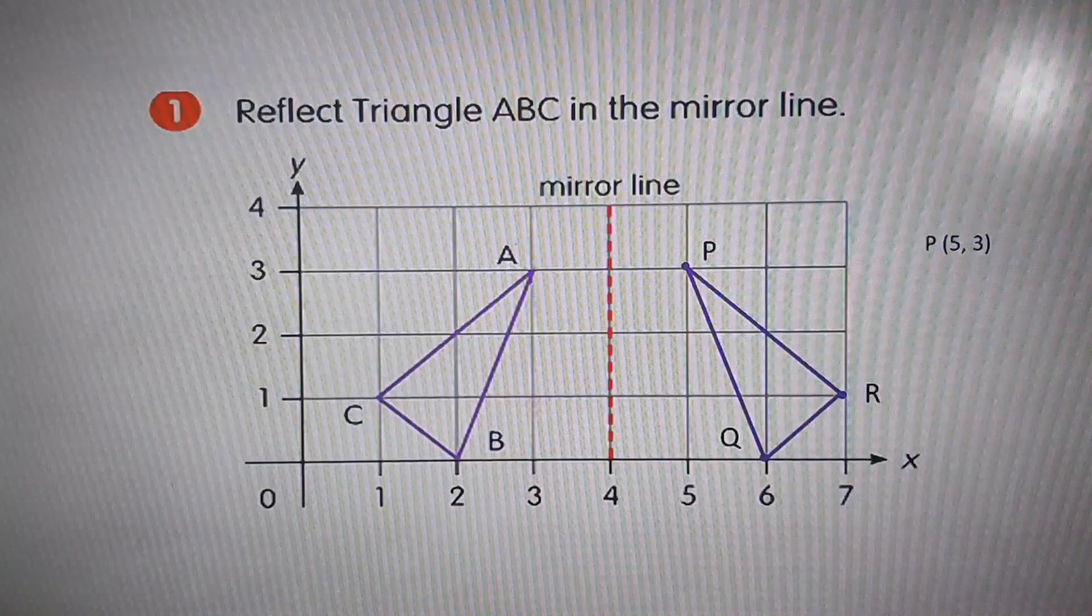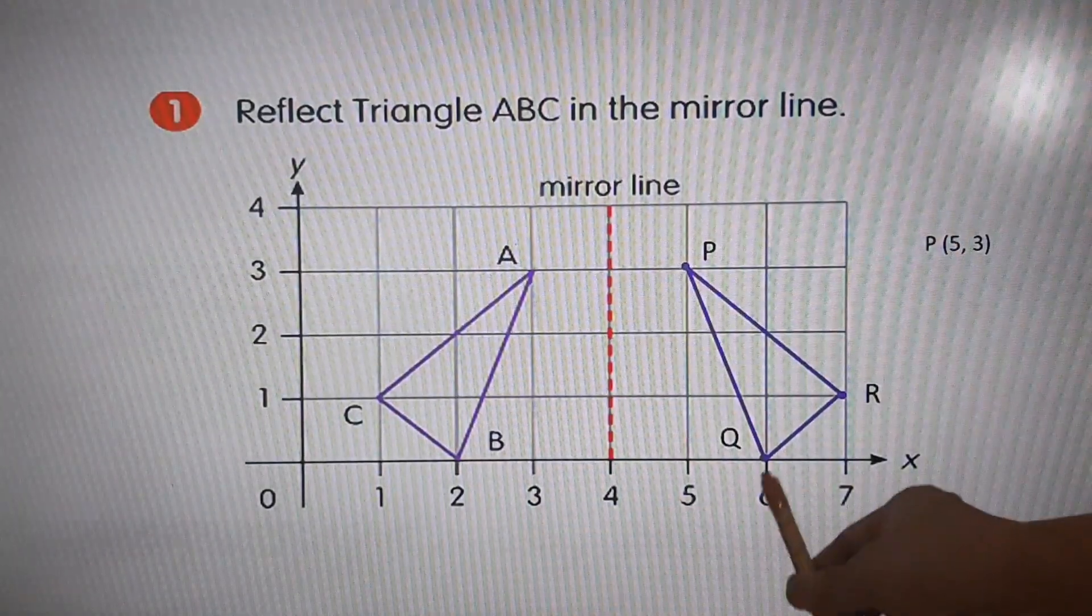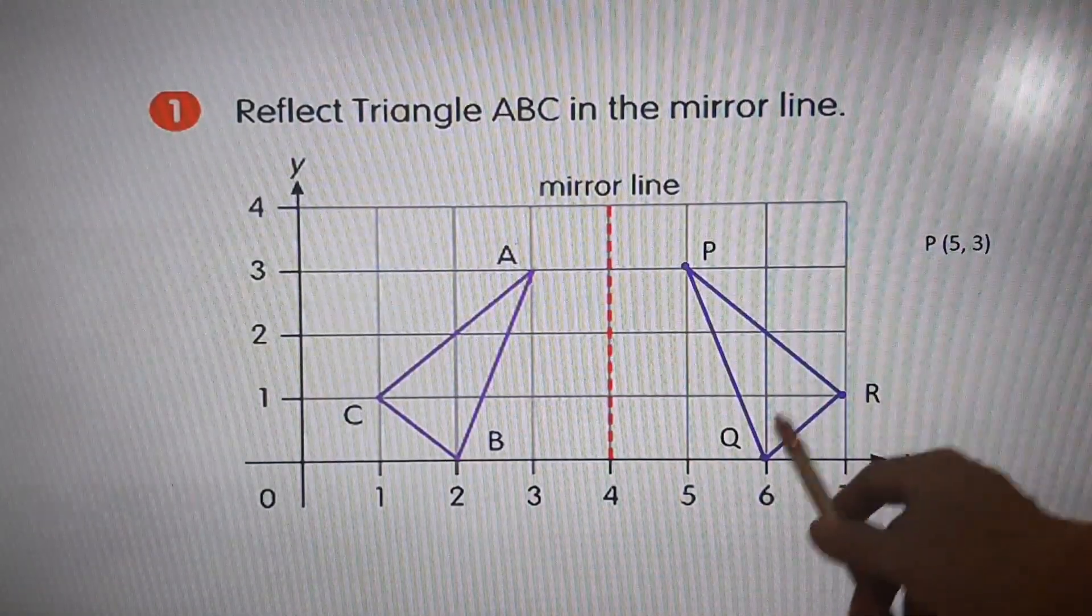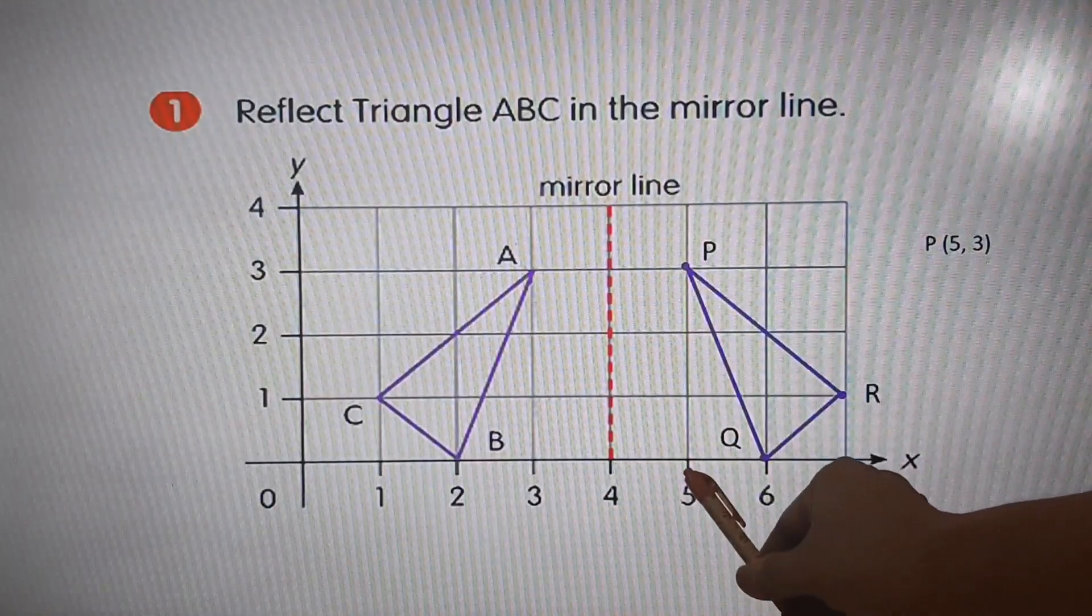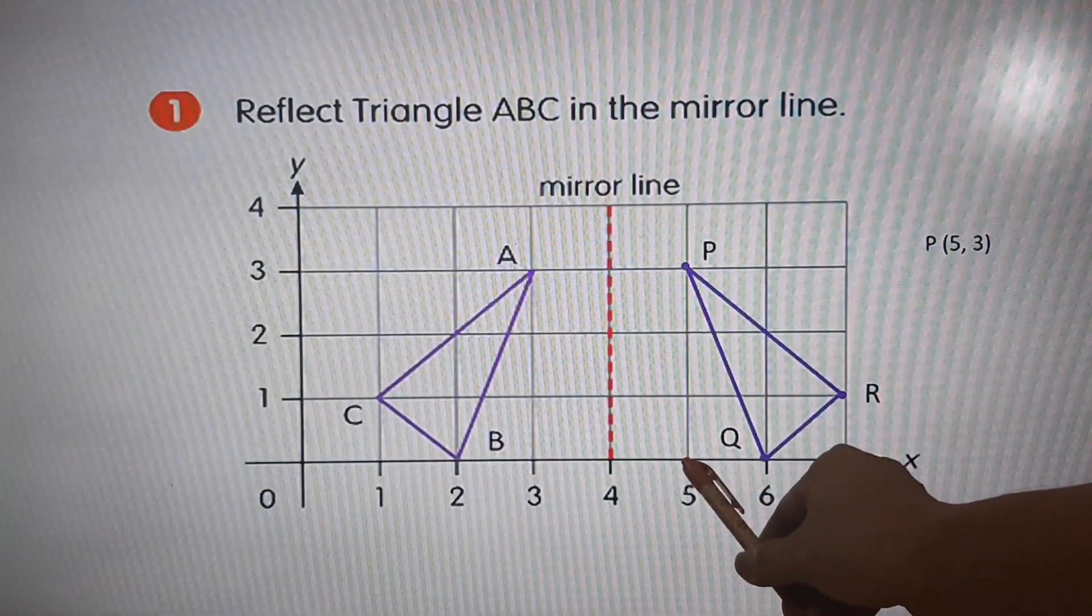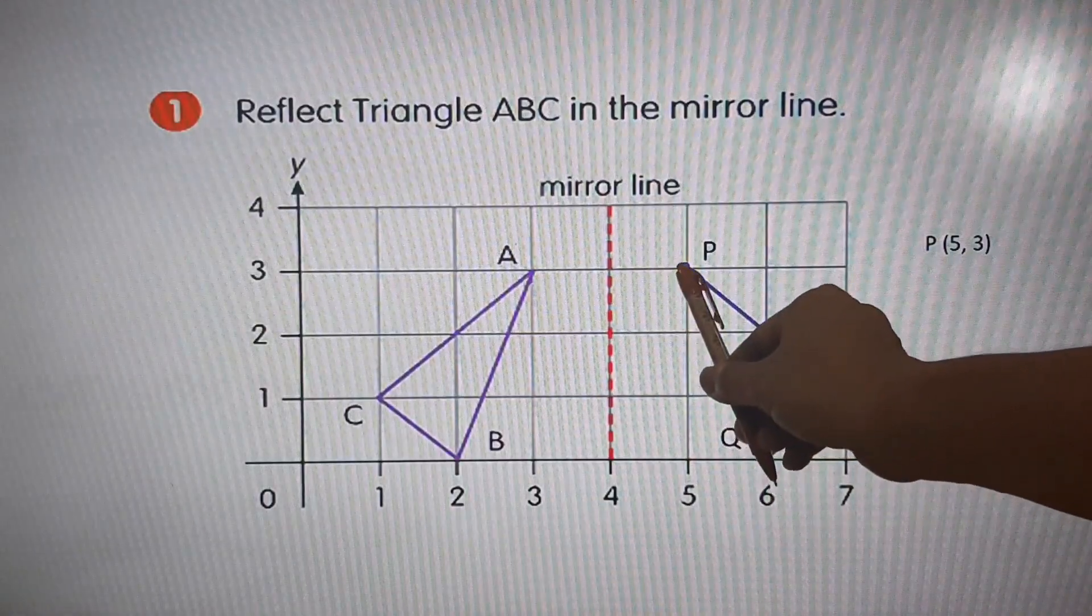Now, the coordinates will be P, five and three, or five comma three. Five is x-axis, and then we have the y, which is three.